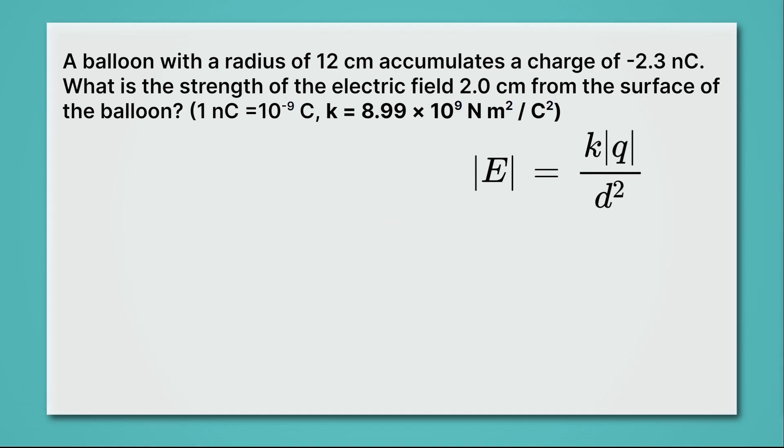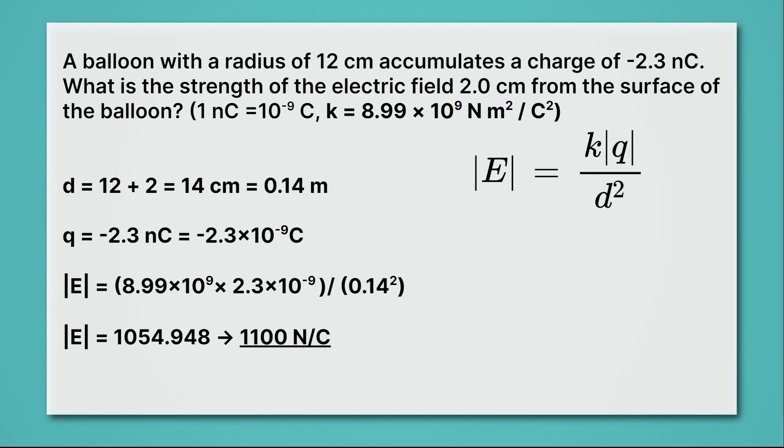Were you able to get it? The answer should have been 1,100 newtons per coulomb. That is after you round for two sig figs. If you didn't get that, pause the video and try to figure out where you went wrong.